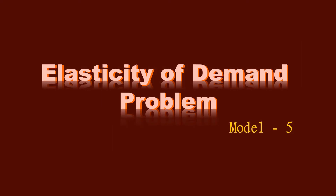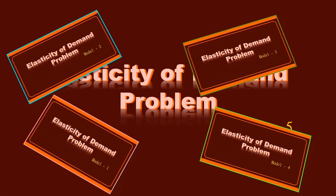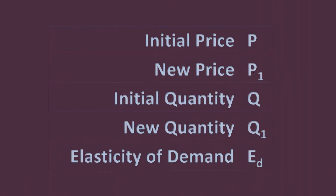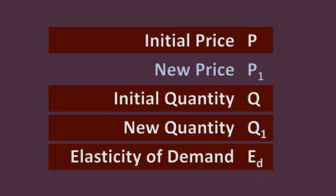Elasticity of Demand Problem Model 5. This is the fifth model in this series. New viewers, please see the first four models — links are given in the description. Students, view all nine models to get the full benefit. Once again I remind you, there is a high chance for any one of the first five models to be asked in the ISE board examination. In this model, all values except the new price are given. We are going to find the new price.